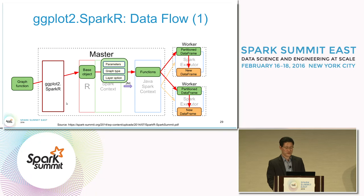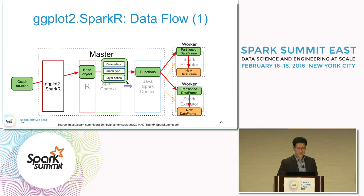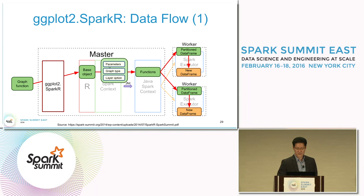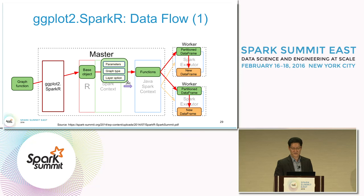The next two slides show the data flow when the input is a Spark data frame. From the graph function, ggplot2.sparkr extracts parameters, graph type, and layer options to make an object in the R process. Those parameters, graph type, and layer options are then parsed in the Spark context and passed to Spark functions related to graph processing.